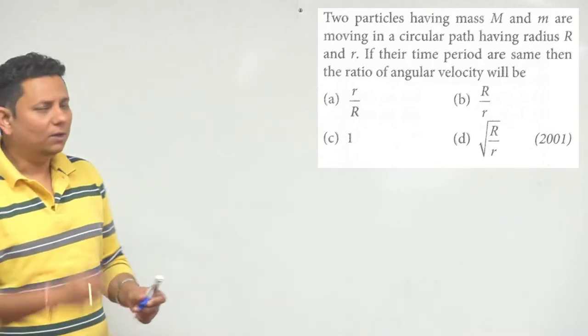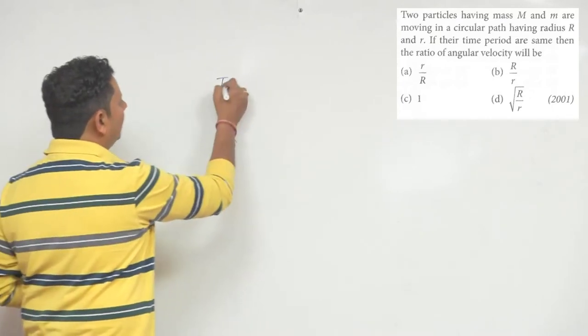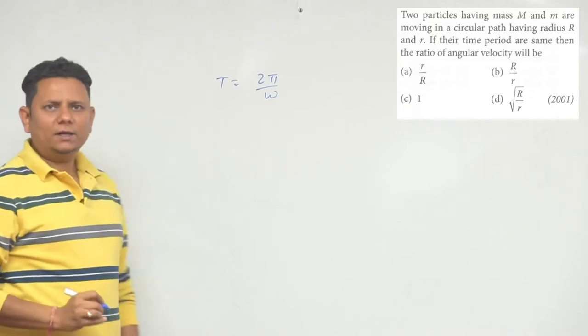Interesting question - this is quite common. You know that the value of time period is T equals two pi by omega. If you have two pi by omega...